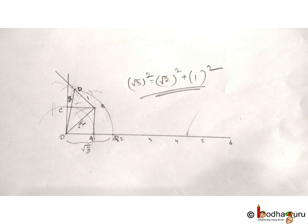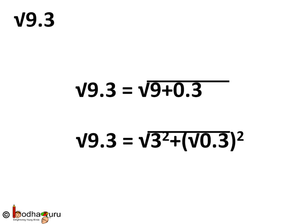Because square root of 3 whole squared is equal to square root of 2 squared plus 1 squared. This is what we learned in our earlier video. Now can you find the value of square root of 9.3 that way?